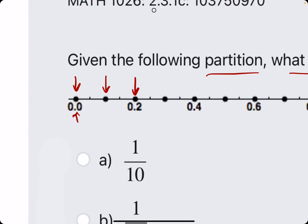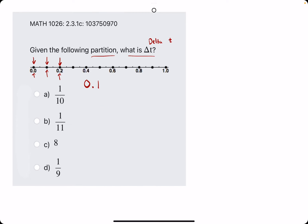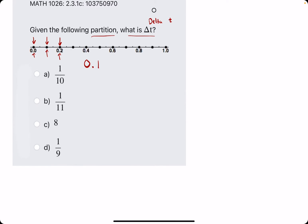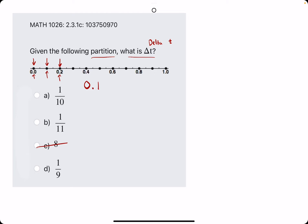We know that halfway between zero and point two must be point one. So we look at these options and say which one must be equal to point one. Can't be eight, likely isn't one over nine.